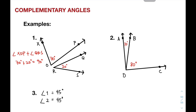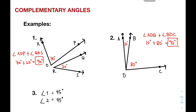Let's move on with item number two. As you can see, these angles are adjacent angles. We need to prove whether they form complementary angles. When you add angle ADB plus angle BDC, it gives you 10 degrees plus 80 degrees, which is equivalent to 90 degrees. Therefore, these two angles form complementary angles.